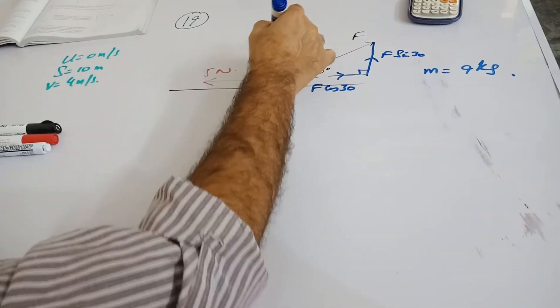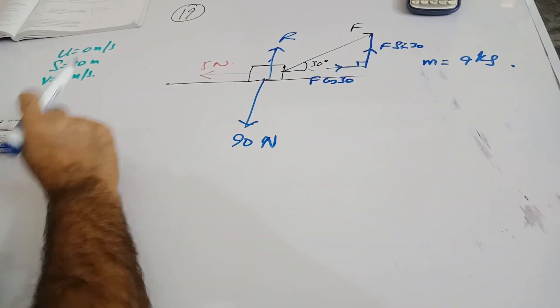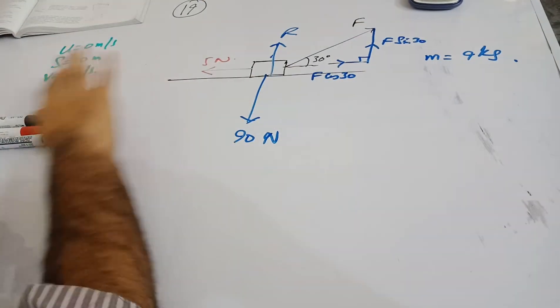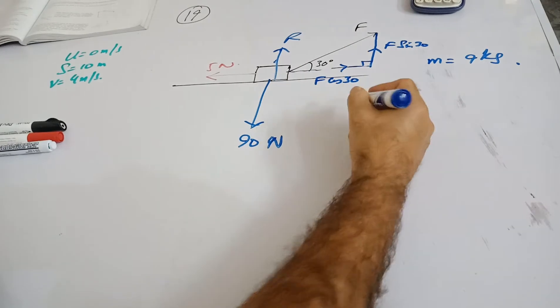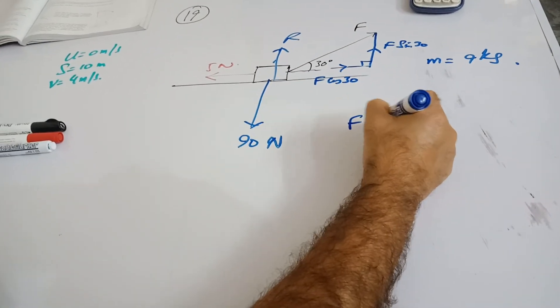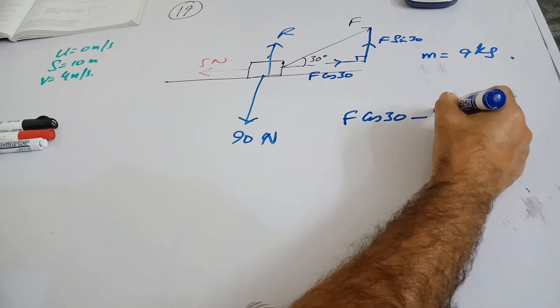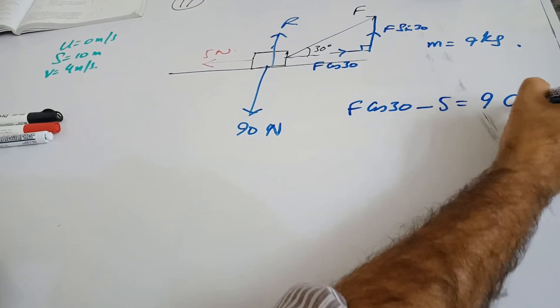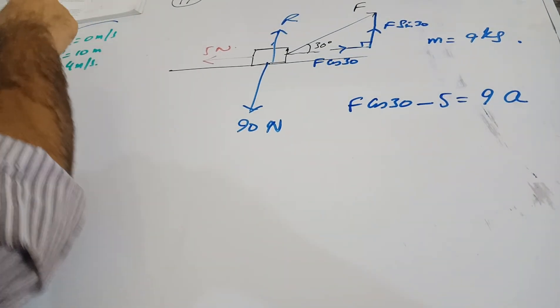So this is going to be F cos 30, this is F sine 30, and here is that R. If I try to find this within this given scenario, if I try to find F, that would be F cos 30 minus the frictional force, that is equal to MA, 9A. So we will find this F.